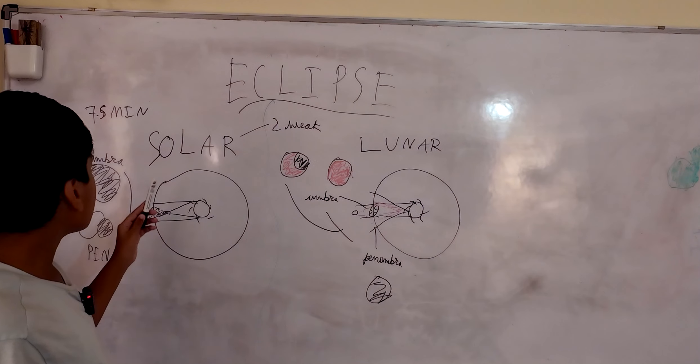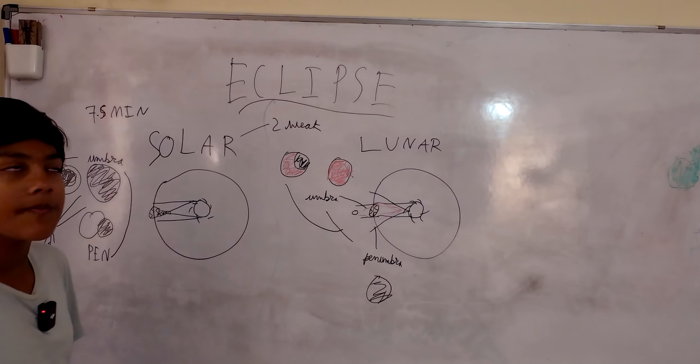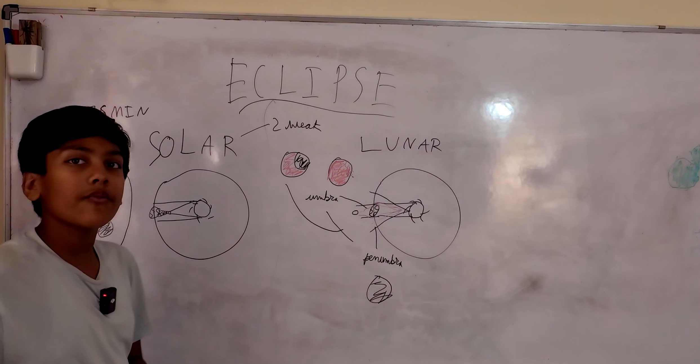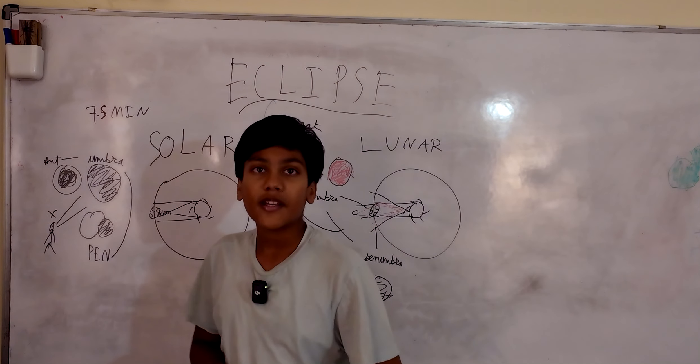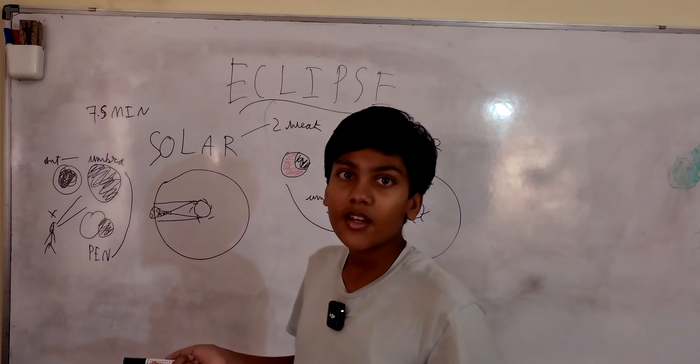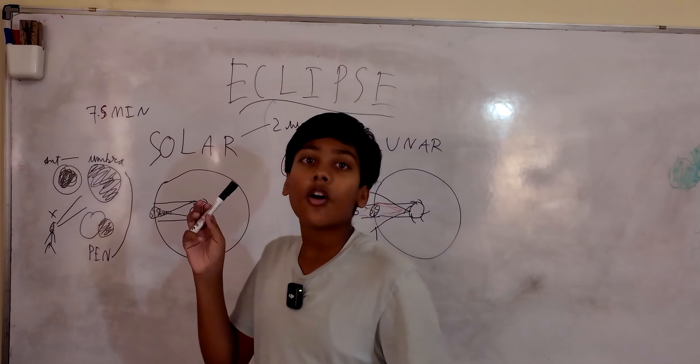Typically solar eclipses can last about seven and a half minutes. Around seven and a half minutes a solar eclipse will take.